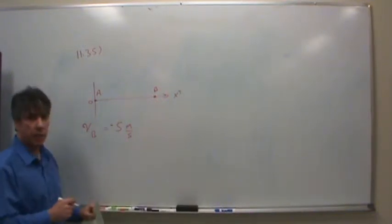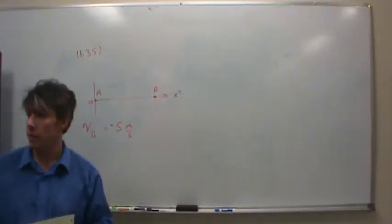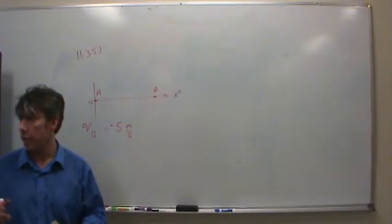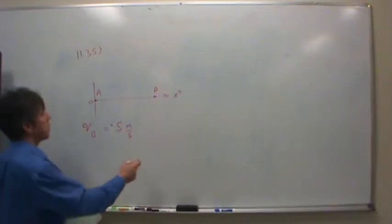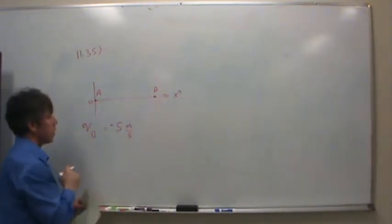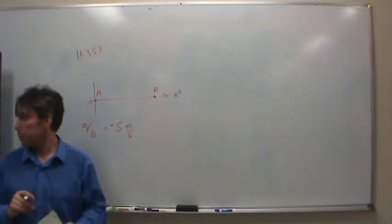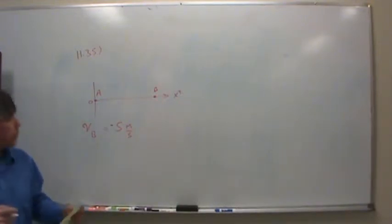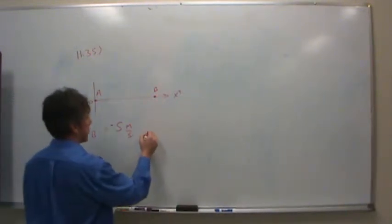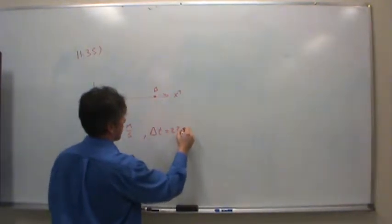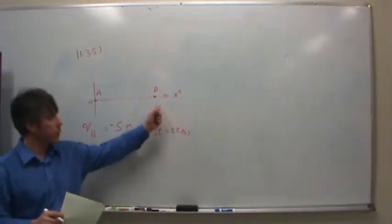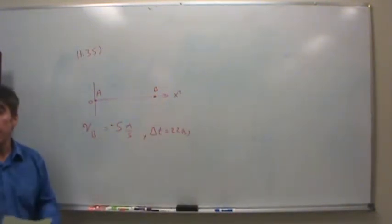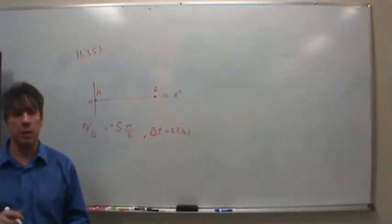Now there's another piece of information they gave us about the bus. Something about time. 22 seconds, that's right. So it took 22 seconds for the bus to go from where it began to O. In fact, that's very simple. How does the equation go for constant velocity? Do you remember that?